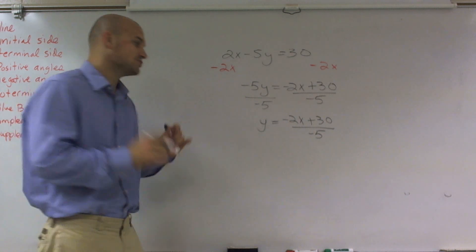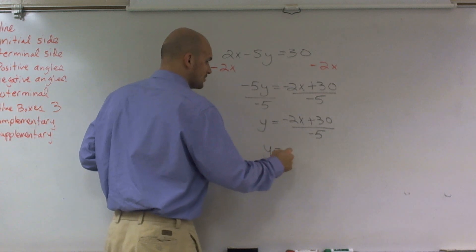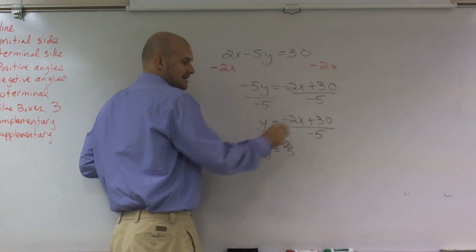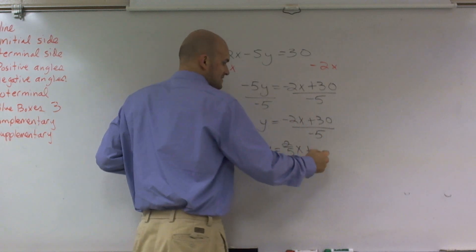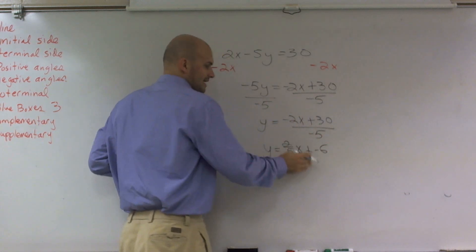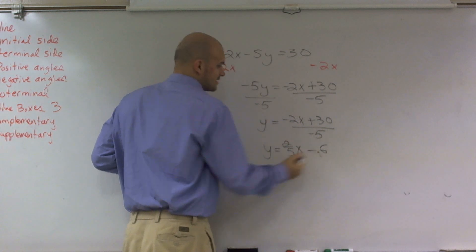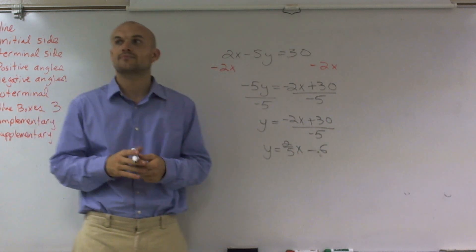However, we want to write it as two separate terms. So I write y equals positive 2 fifths, because a negative divided by negative is a positive, plus 30 divided by negative 5 is negative 6.